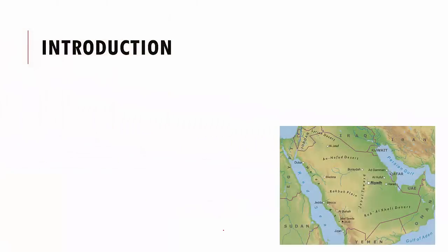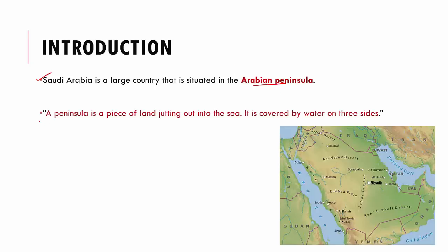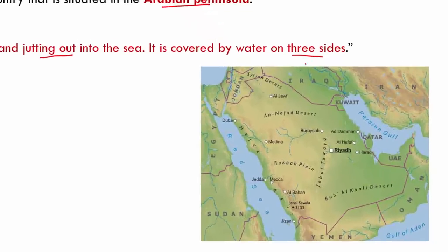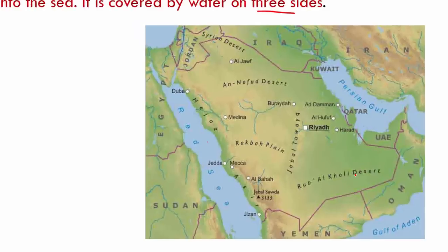Saudi Arabia is a large country situated in the Arabian Peninsula. A peninsula is a piece of land that juts out into the sea and is covered by water on three sides. As you can see here, this is the Arabian Peninsula — a piece of land jutting out into the sea, covered by water on three sides.